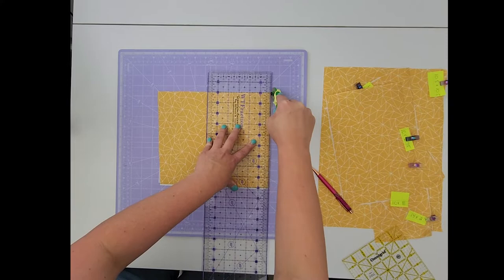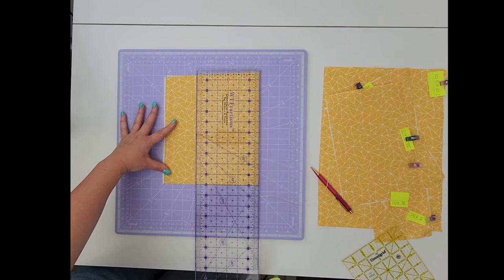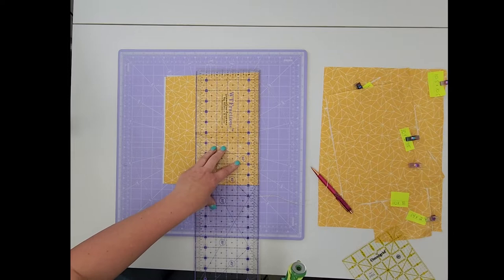Turn your fabric around so the straight edge is along the bottom. Line up a line on the straight edge of the ruler and get it as close to the edge of the fabric as you can, making sure to cut a straight line along a second edge. This will give us a 90 degree angle.